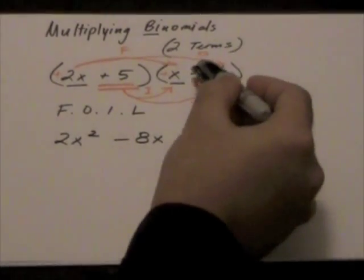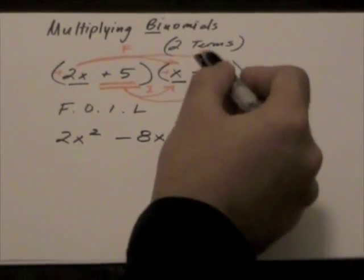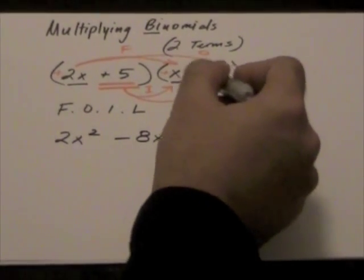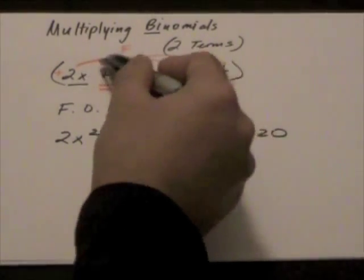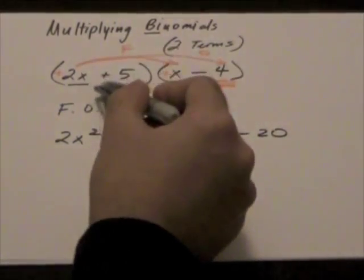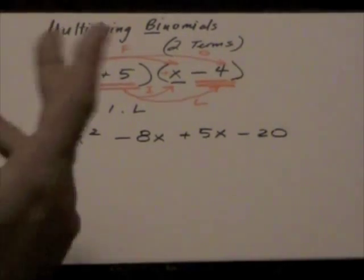But the one thing to keep in mind is, whenever we have a negative for our sign, we treat this negative with this number. So, it's not just minus 4 and we treat it just as a 4, but when we're multiplying this positive 5, we're multiplying this positive 5 with negative 4 to give us this negative 20.